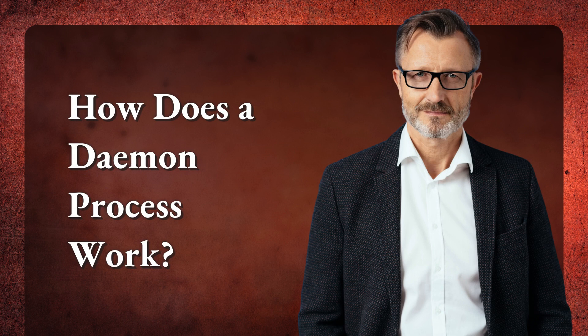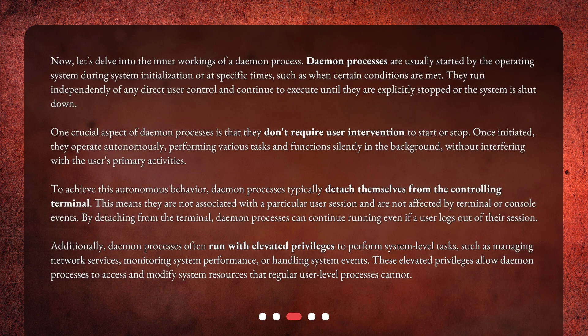How does a daemon process work? Let's delve into the inner workings of a daemon process. Daemon processes are usually started by the operating system during system initialization or at specific times, such as when certain conditions are met. They run independently of any direct user control and continue to execute until they are explicitly stopped or the system is shut down. One crucial aspect of daemon processes is that they don't require user intervention to start or stop. Once initiated, they operate autonomously, performing various tasks and functions silently in the background, without interfering with the user's primary activities.